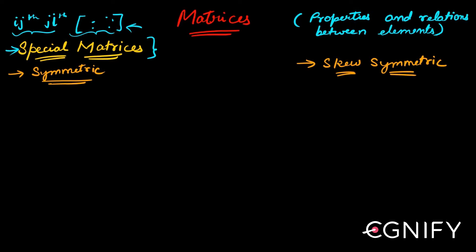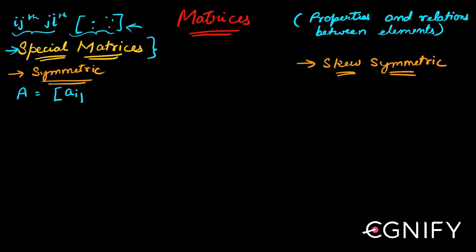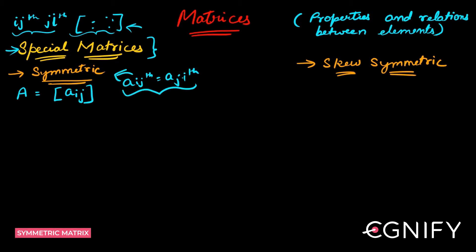We will start with these two matrices first: symmetric and skew symmetric. I'll first write the definition and then we'll try to understand what it actually means. So this is your matrix A, denoted as Aij. Now if every Aij element equals the Aji element, then it's a symmetric matrix. This is the sole condition — every Aij element should be equal to every Aji.